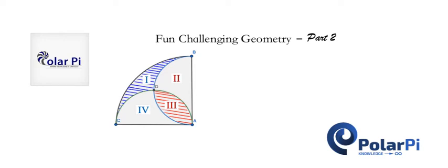Hey guys, part two here, and we have a really cool problem. It starts with a quarter circle divided into four different regions, and the task is to show that the area of region one, the blue shaded region, is the same as the area of region three, the red shaded region.